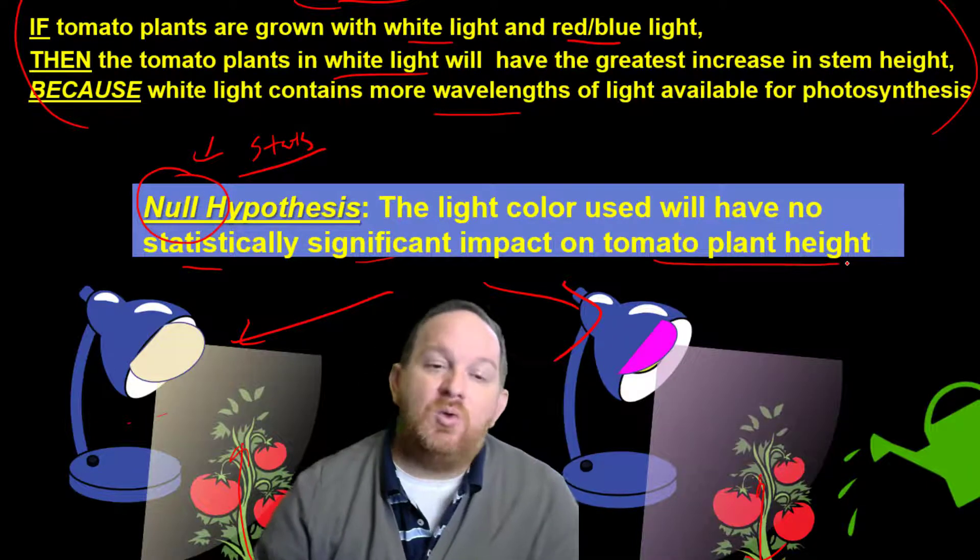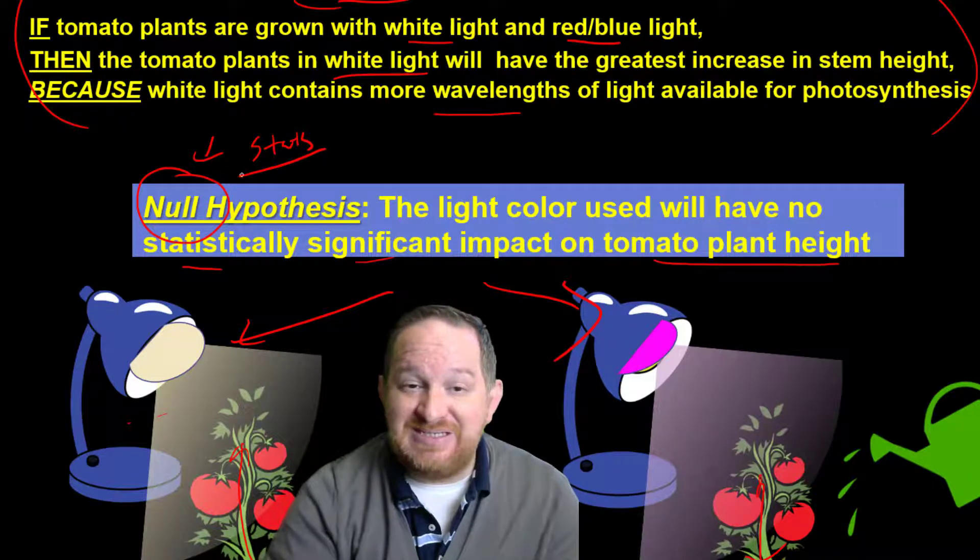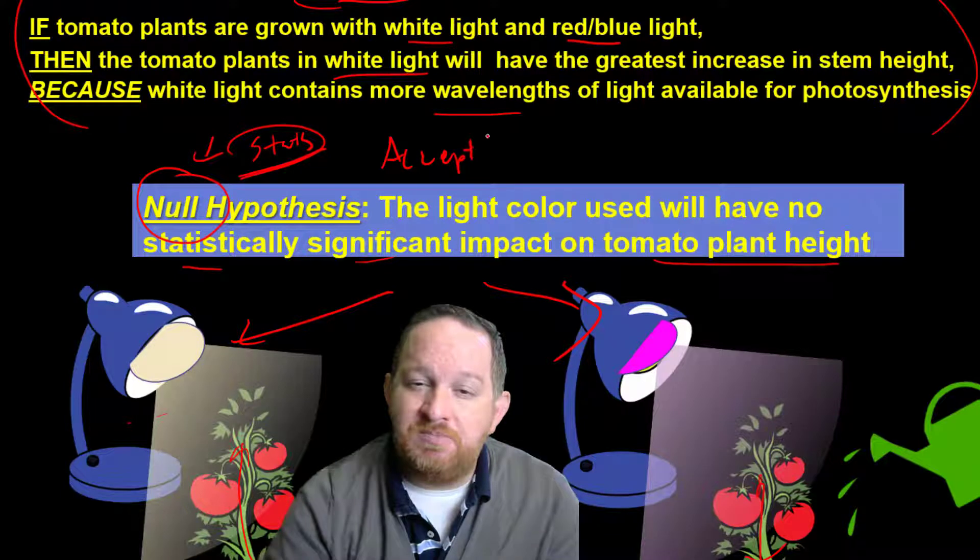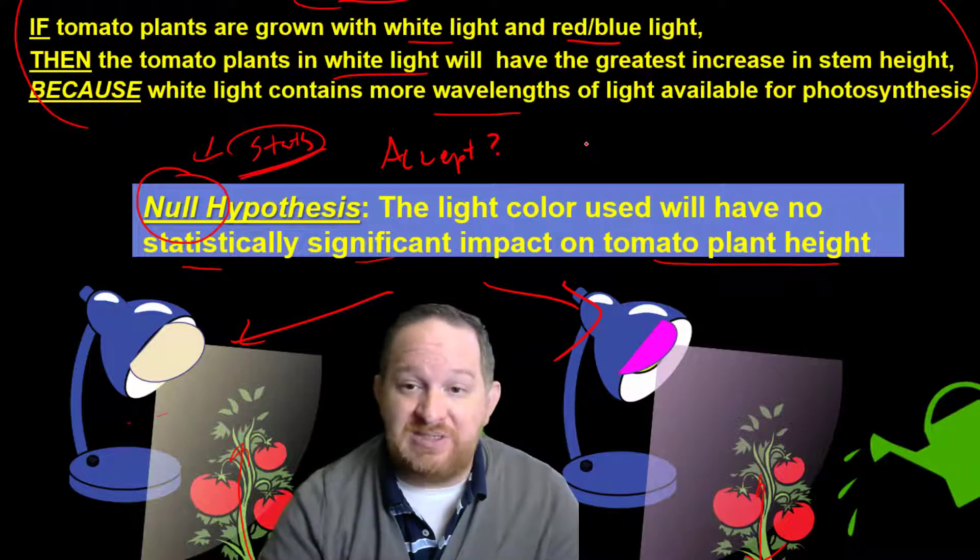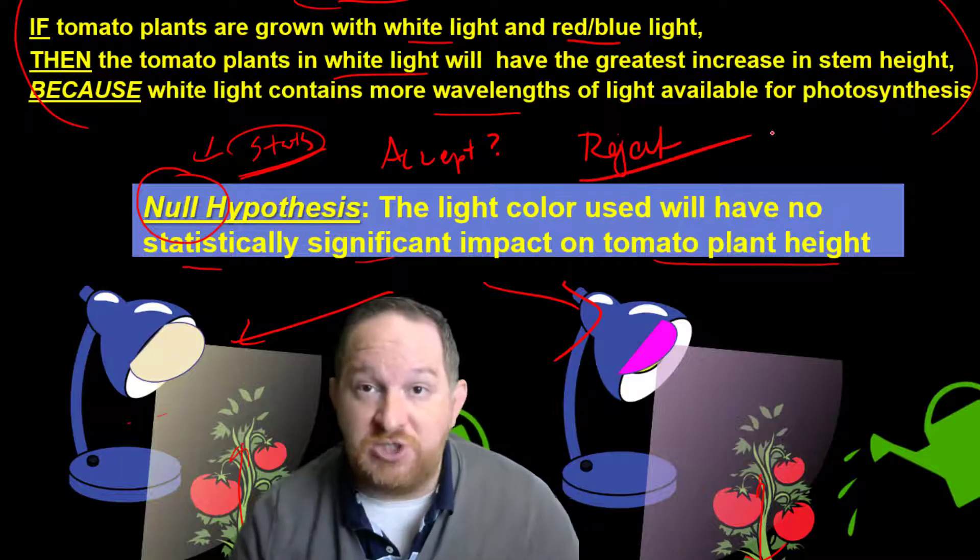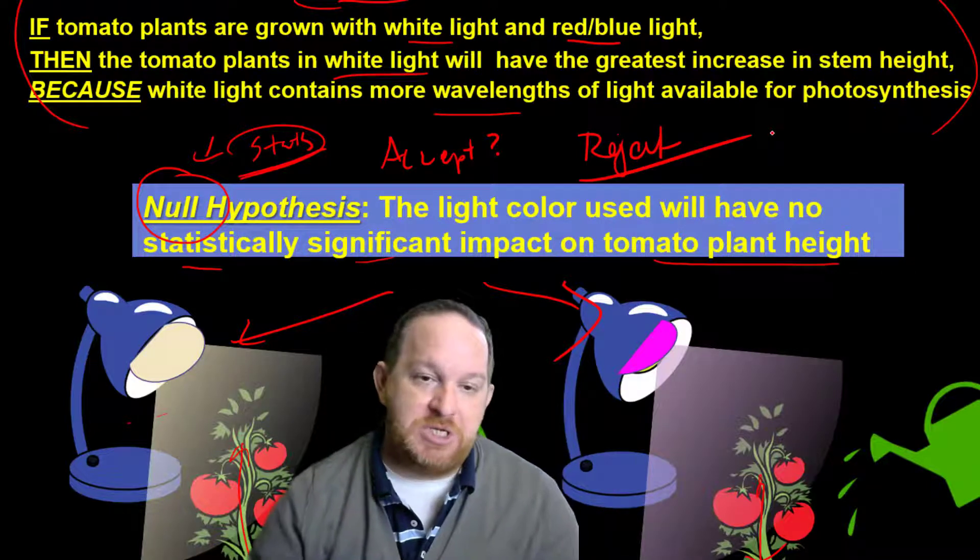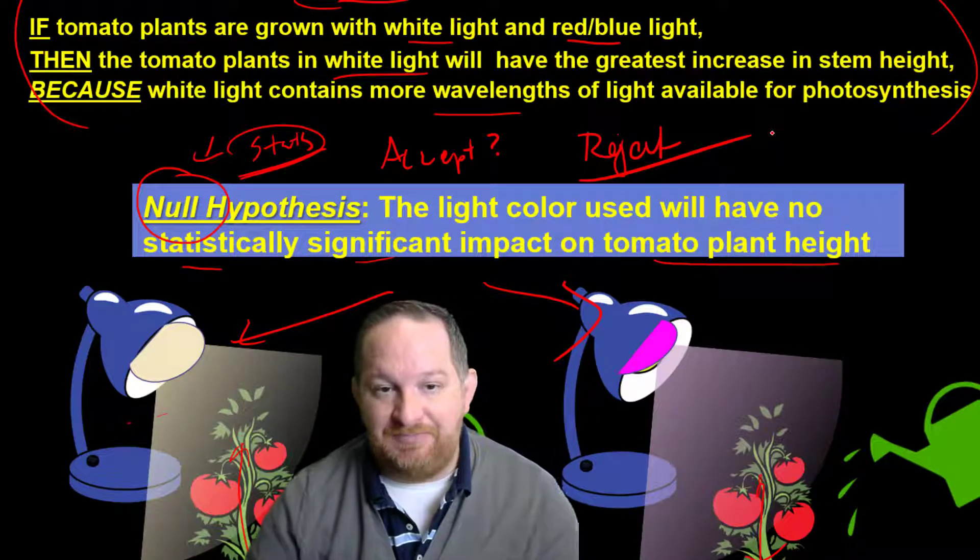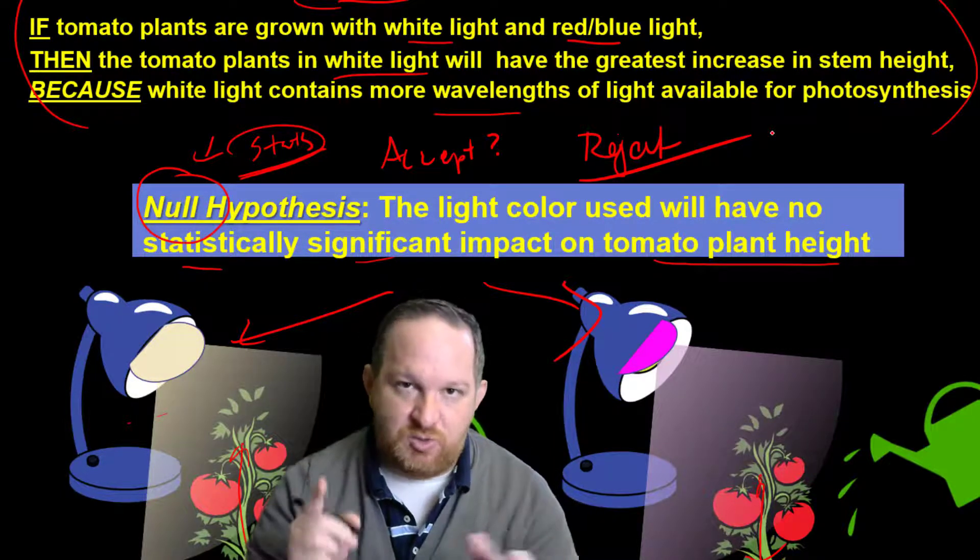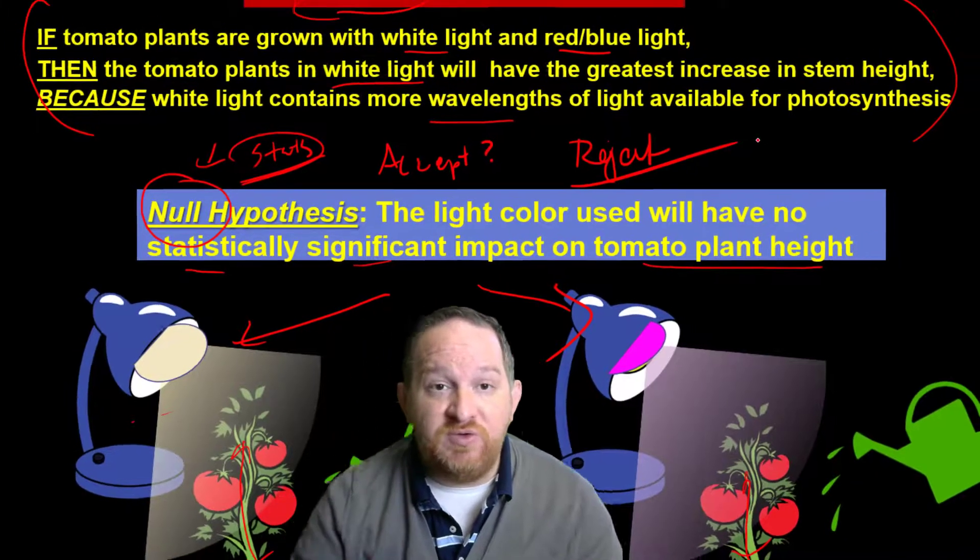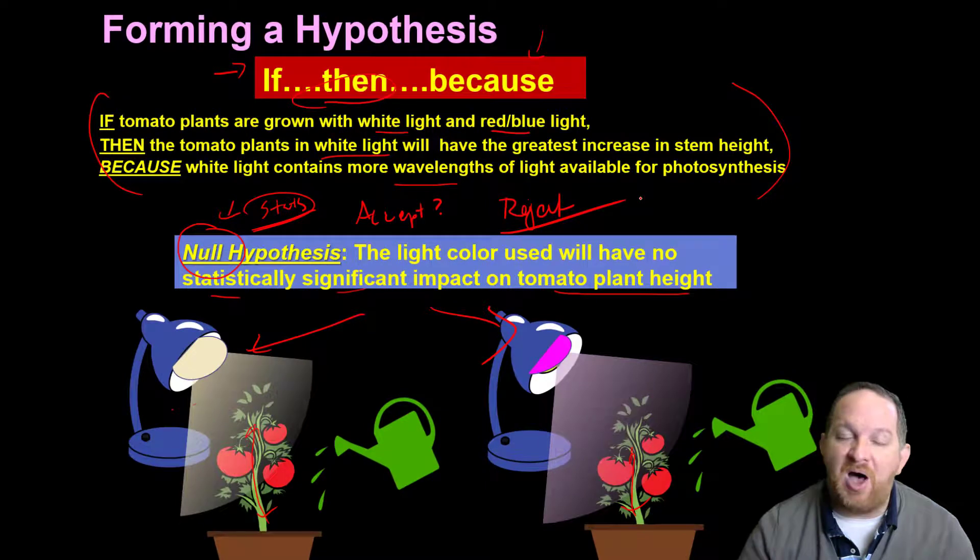Why do we need that? Well, later on, we're going to decide statistically will we accept this null, or will we fail to accept it, or will we reject the null, or fail to reject, depending on the language you want to use. So the null hypothesis is basically just us saying there's going to be no statistically significant difference between these two groups. So that is a good overview there for you of how to form a hypothesis.